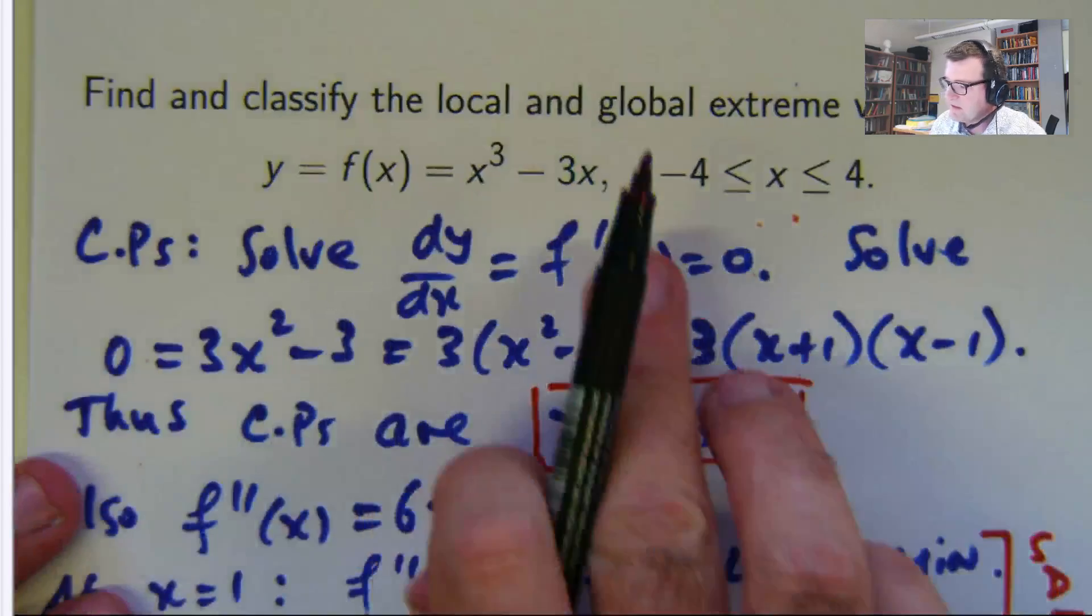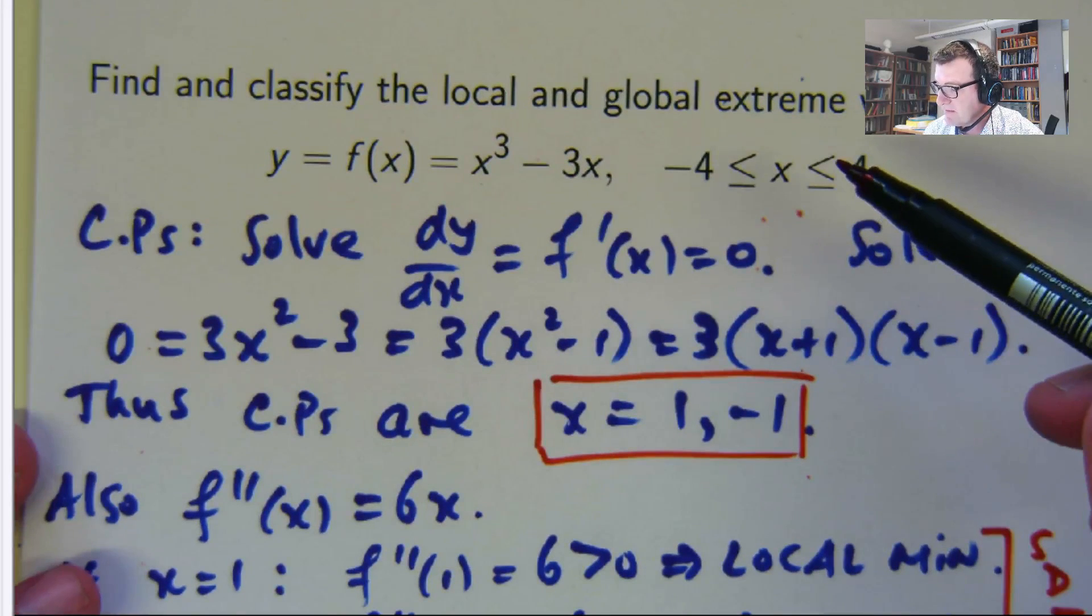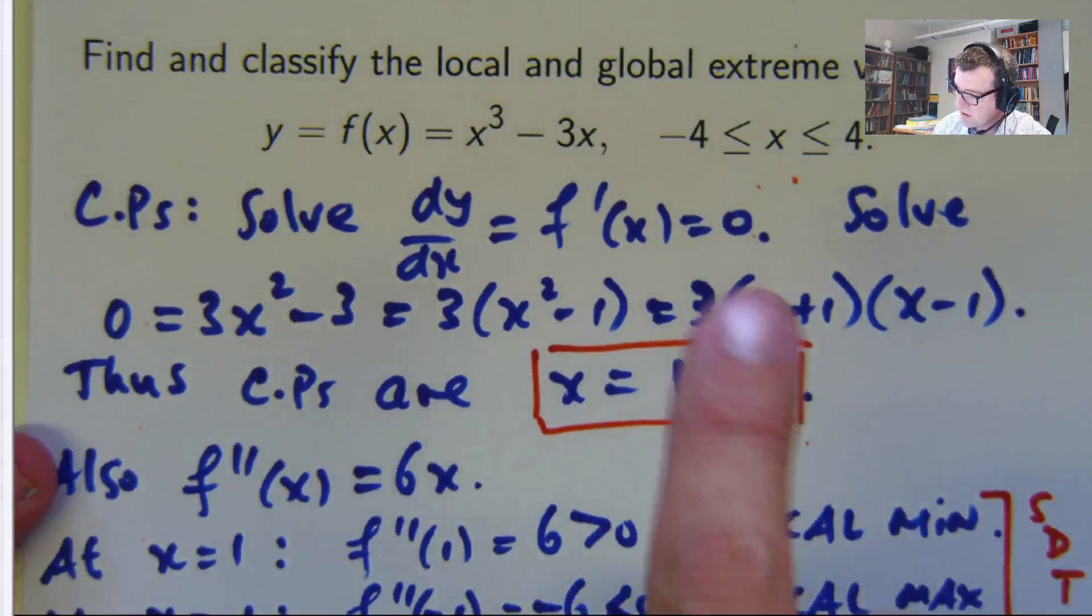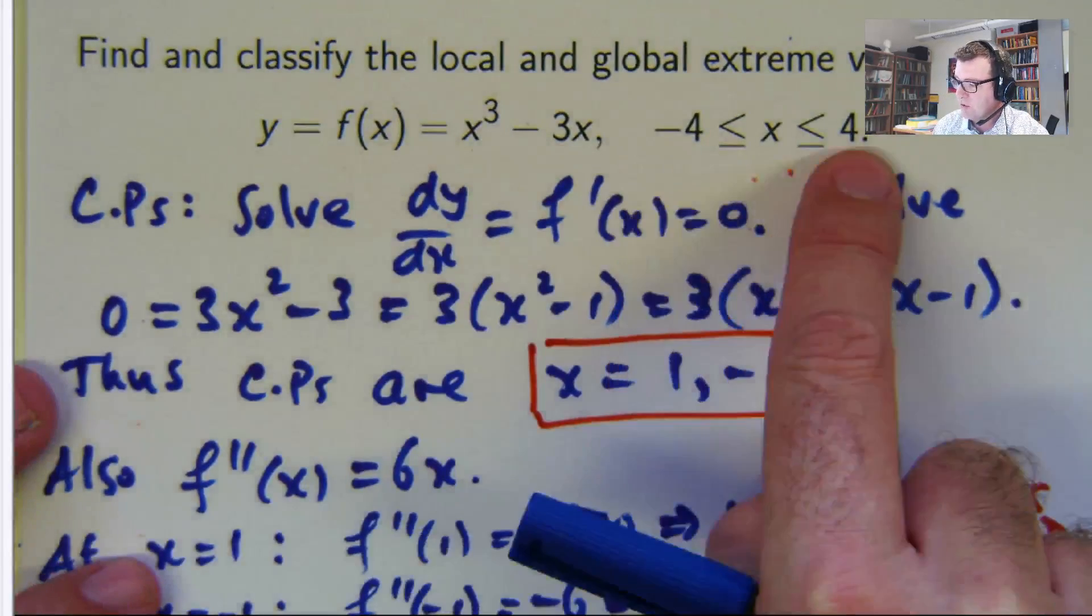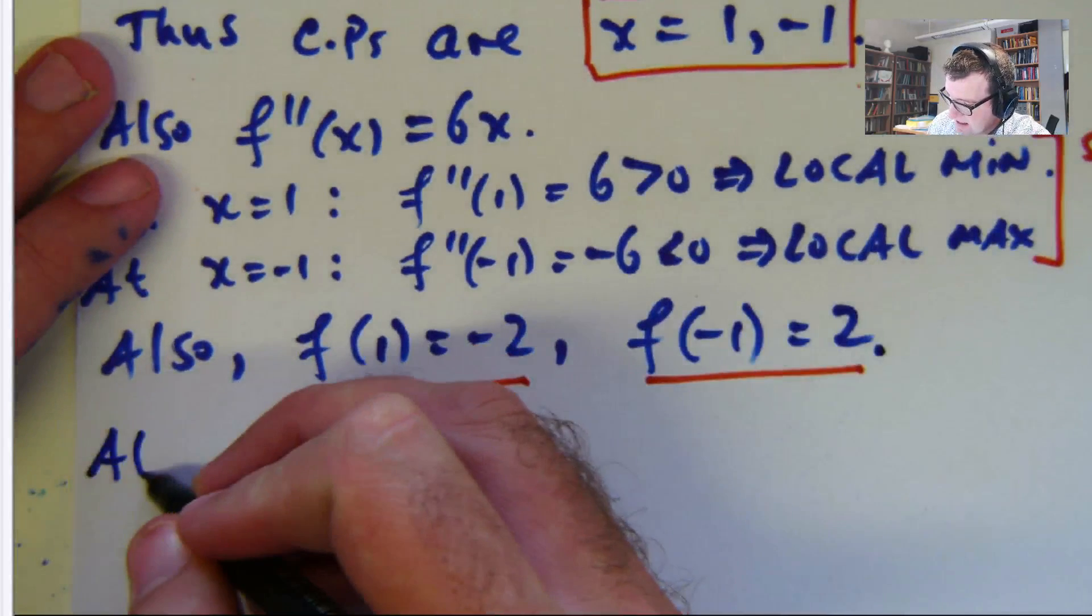So we're making headway. Now, because this is a nice continuous function, its global maximum and minimum values occur either at the critical points or the end points of the interval. So we've got to check that. And this will be our last thing, we'll compare them.